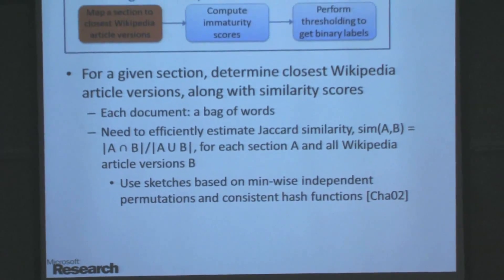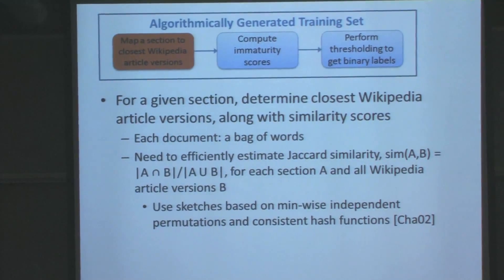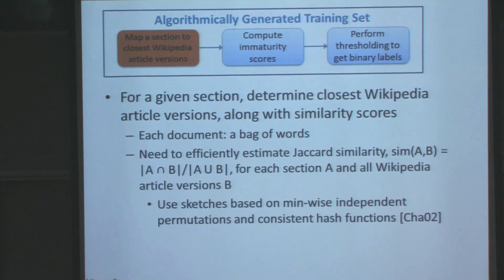The Wikipedia article has evolved over many versions. If the section did not have a good description of a concept like the Revolutionary War, the premise is that it will map to an early, immature version of the Wikipedia article with high immaturity. To map textbook sections to Wikipedia article versions, we use sketches based on min-hash independent permutations to estimate Jaccard similarity.